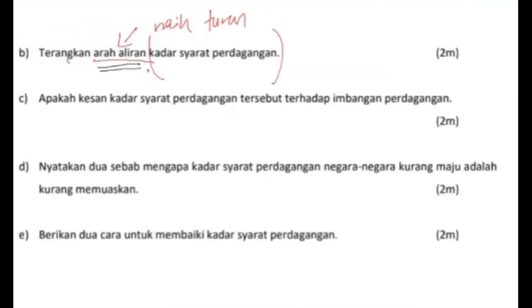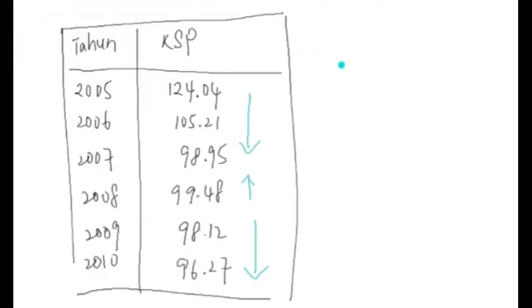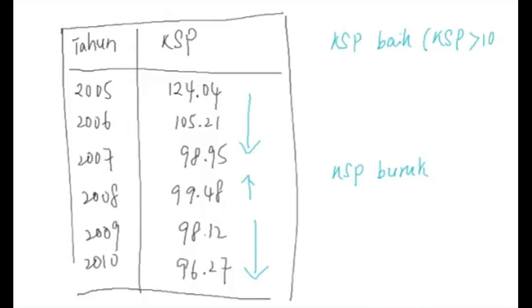Kita sambung bagi soalan yang seterusnya, iaitu soalan C. Soalan yang ditanya: apakah kesan KSP terhadap imbangan perdagangan? Kalau nak kaitan dengan imbangan perdagangan, kita tengok dari segi KSP ini dulu. Sebenarnya KSP itu kita boleh tengok sama ada KSP itu baik ataupun tak baik. Kalau KSP itu baik, bermaksud KSP dia adalah lebih daripada 100. Kalau yang tak baik, di mana KSP dia kurang daripada 100.